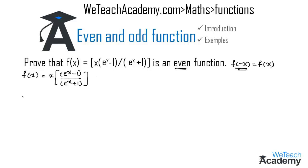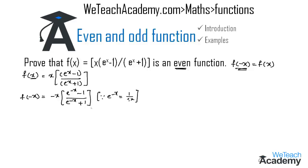First let us find the value of f(-x) by replacing x with -x. So we get f(-x) = (-x) · (e⁻ˣ - 1) / (e⁻ˣ + 1). Using the exponential property e⁻ˣ = 1/eˣ, we can write this function as f(-x) = (-x) · (1/eˣ - 1) / (1/eˣ + 1).